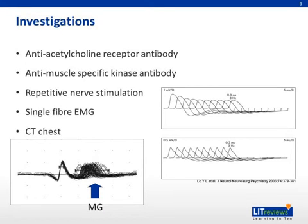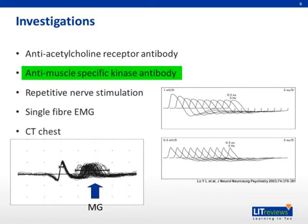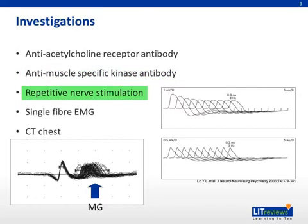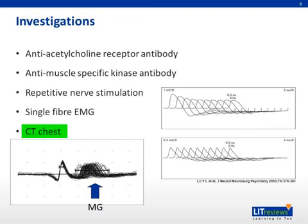Demonstration of the autoantibodies provides the laboratory diagnosis for MG. The anti-acetylcholine receptor antibodies are present in 88% to 94% of patients with generalized MG, and about 50% of patients with ocular MG. Anti-muscle specific kinase antibodies are present in about 38% to 50% of patients with generalized MG, while they are rarely found in patients with ocular MG. Electrophysiological evidence for MG can be obtained from repetitive nerve stimulation, showing decremental amplitudes of muscle action potential, and single fiber electromyography demonstrating jitter due to the variability of the action potentials generated. MG may be associated with thymoma, thus a CT scan of the chest should be performed.